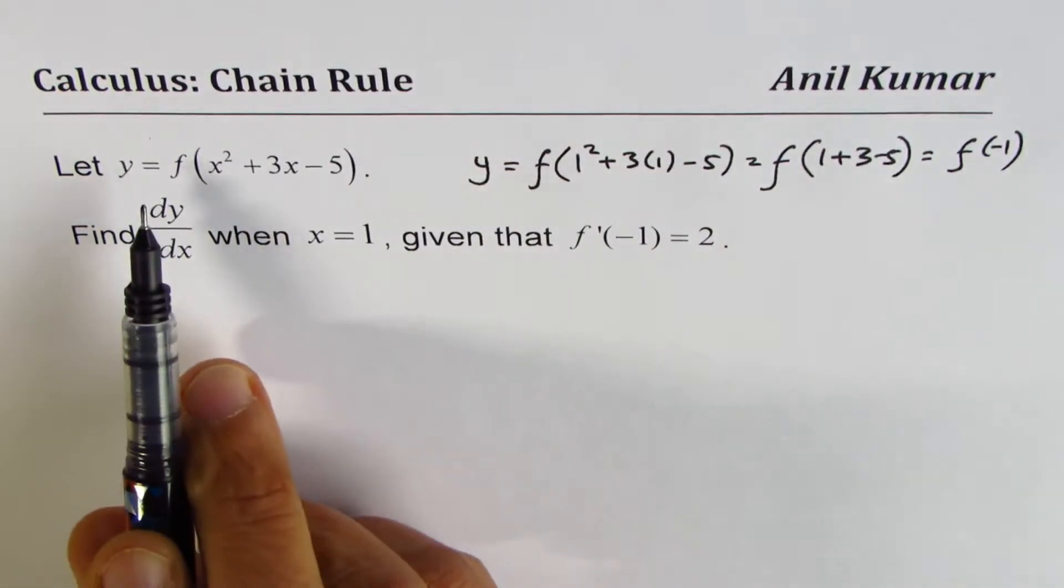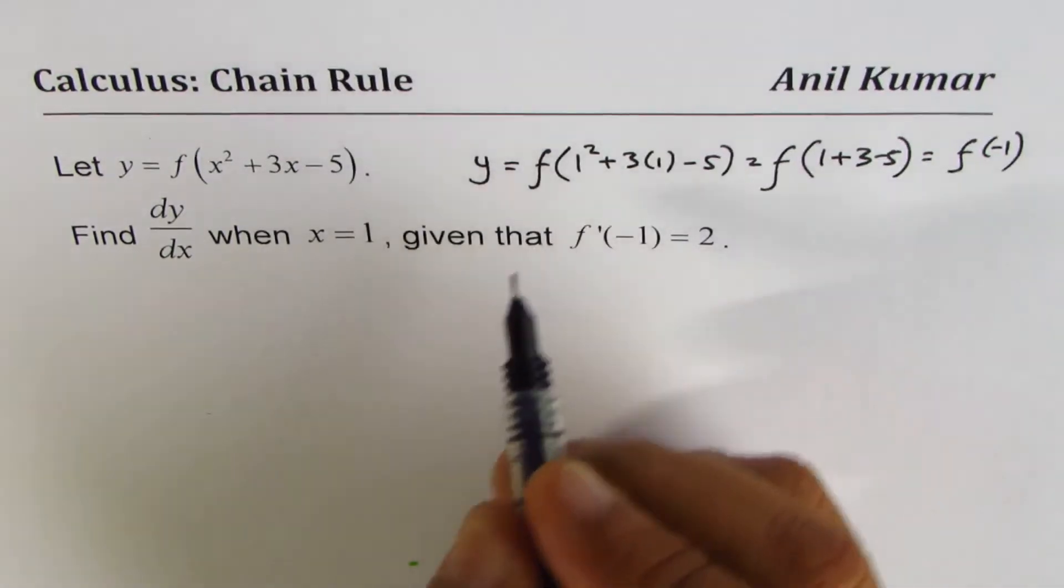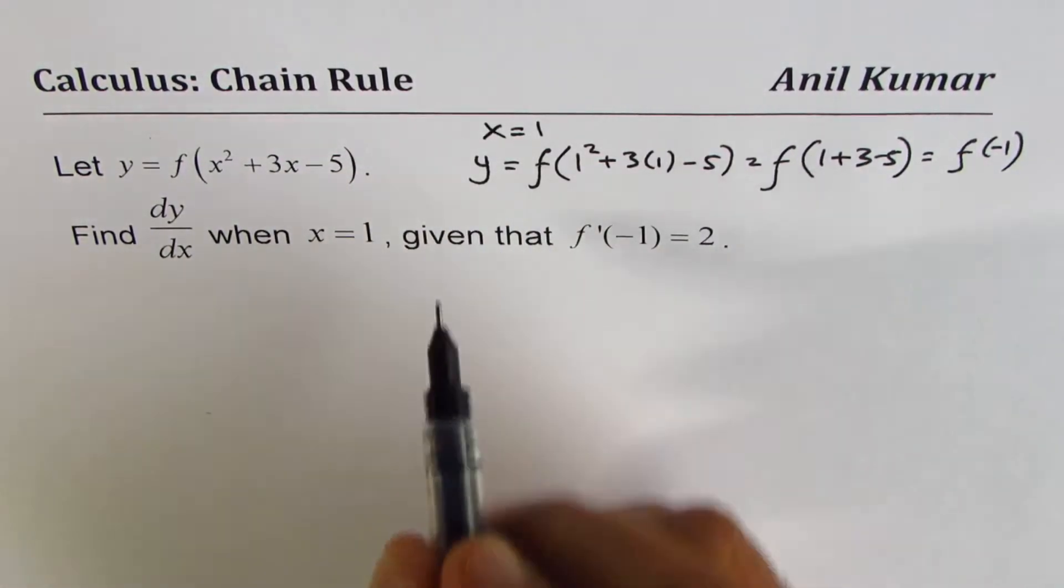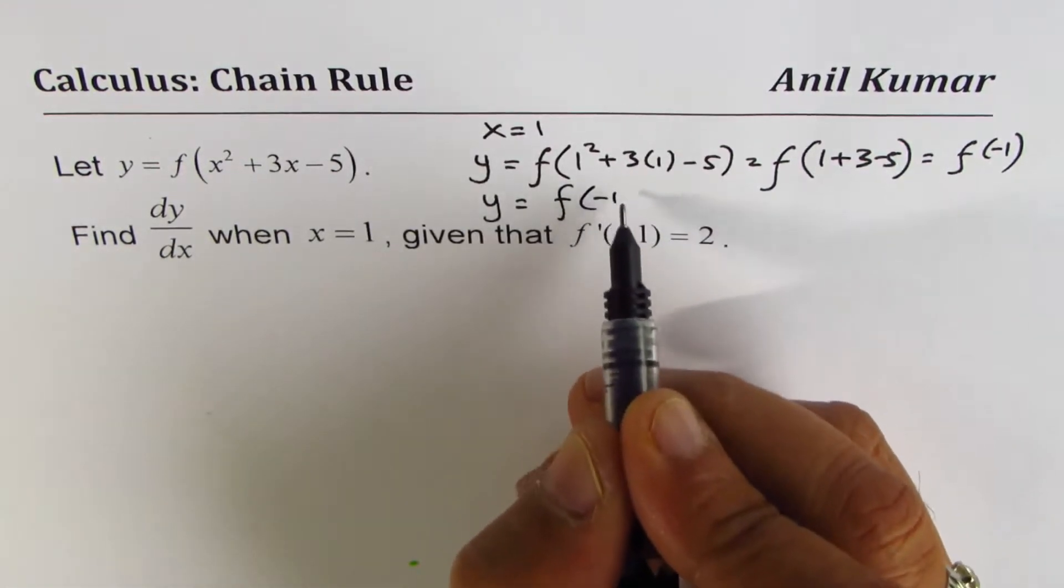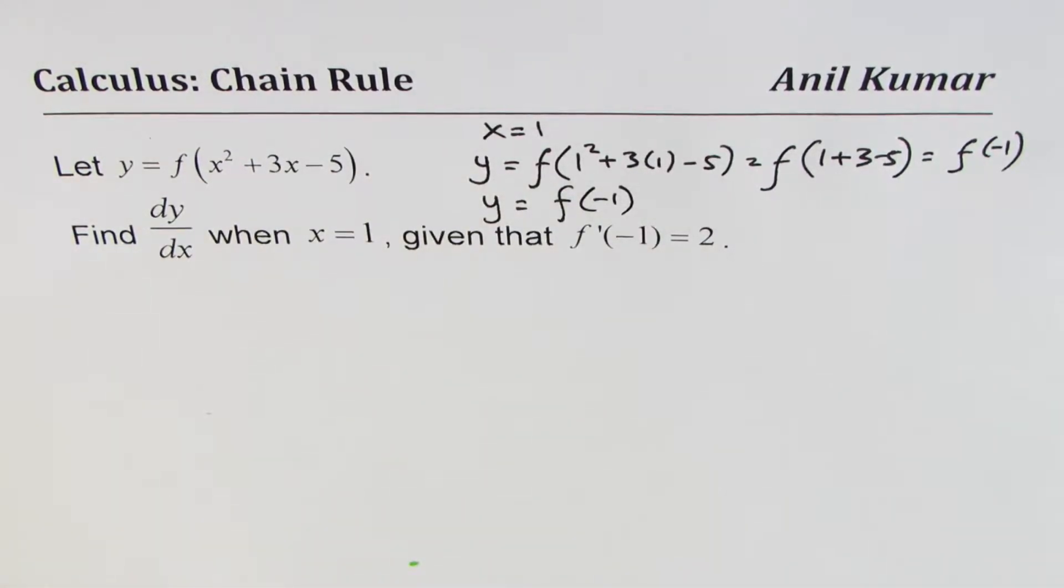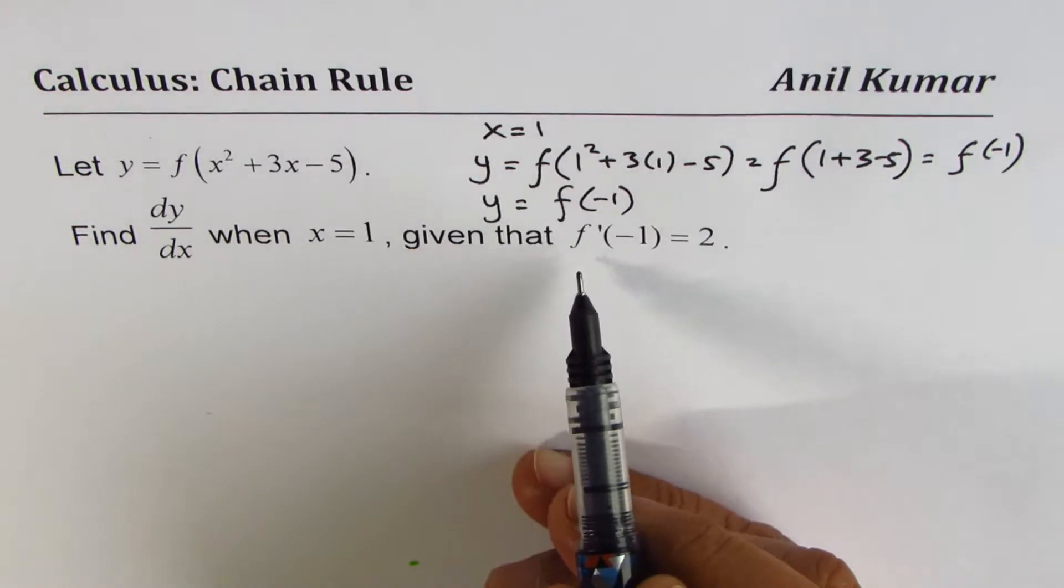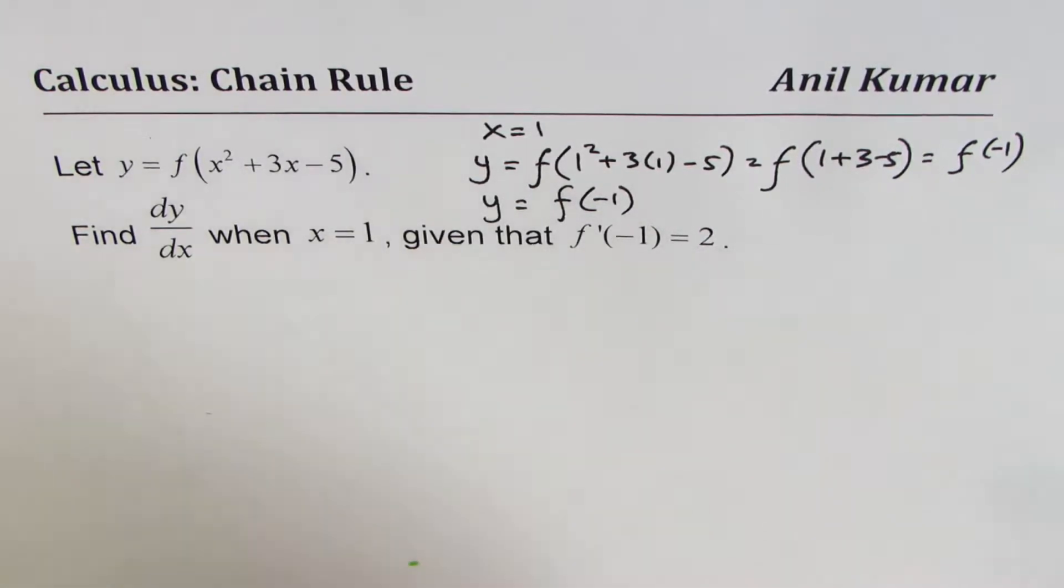So basically, at x equals 1, y is equal to f of minus 1. That is what we know, and that is the reason why we are given the derivative at minus 1.